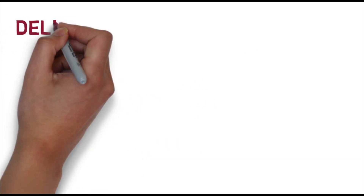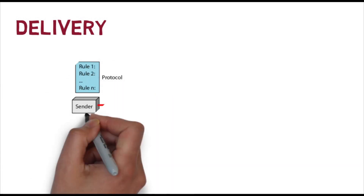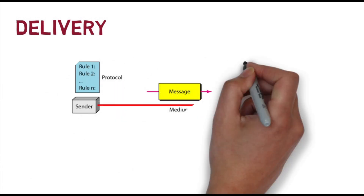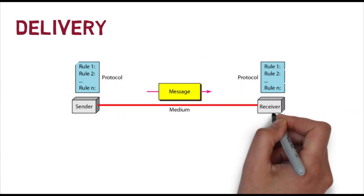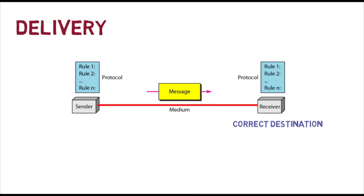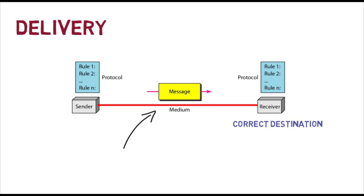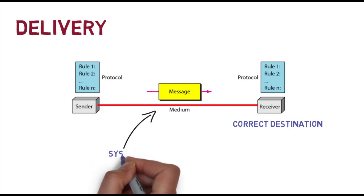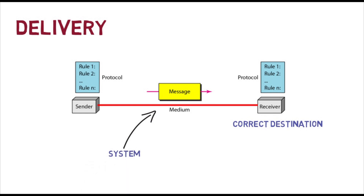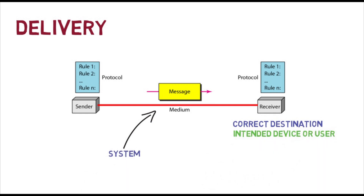Now we will discuss the four fundamental characteristics one by one. The first characteristic is delivery. The system must deliver data to the correct destination. Data must be received by the intended device or user, and only by that device or user.